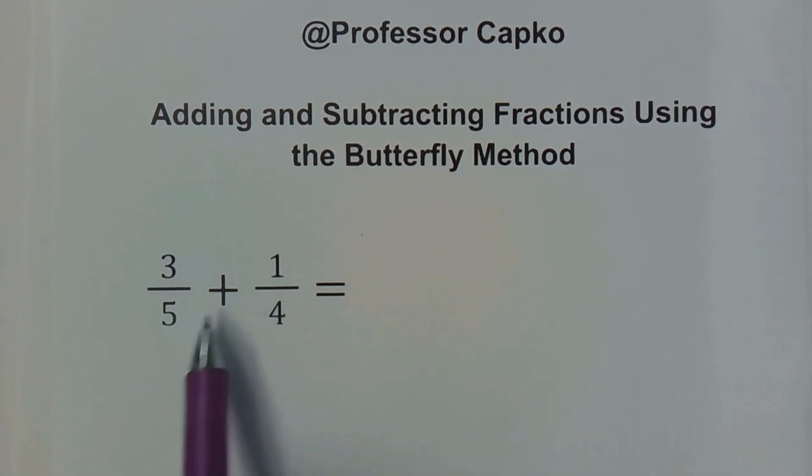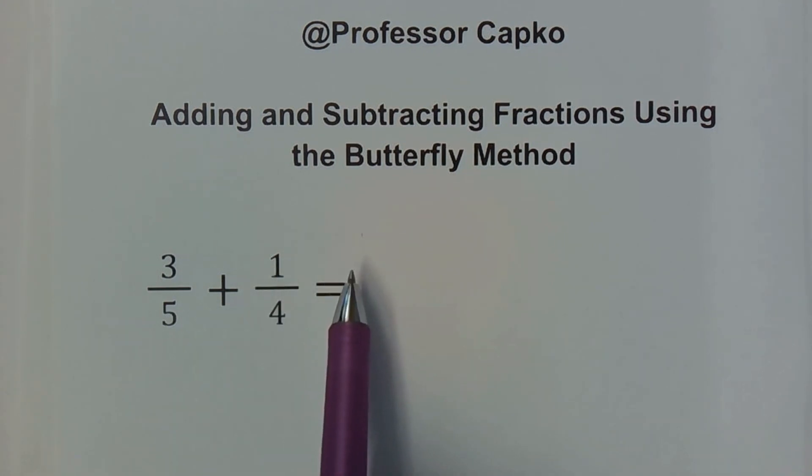Now as we know, when you're adding or subtracting fractions you have to have a common denominator. So if you had a common denominator, you could just add or subtract the numerators, which is the numbers on the top. The denominators are the numbers on the bottom, and if they're not the same we can't just simply add them. We're going to have to take these other steps, and today we're going to use this butterfly method.